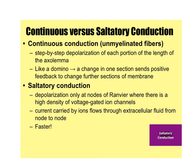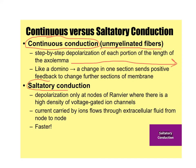Continuous conduction occurs in unmyelinated axons and is slower because the action potential has to travel the entire length of the axon. Saltatory conduction is much faster — that's when axons are myelinated and the action potential can jump from node of Ranvier to node of Ranvier, skipping large sections and not having to travel the entire length of the axon.